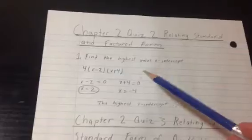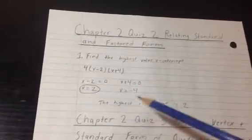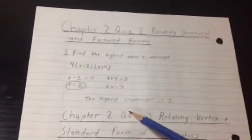So 2 is the highest x-intercept because 2 is greater than negative 4. So the answer is the highest x-intercept is 2.